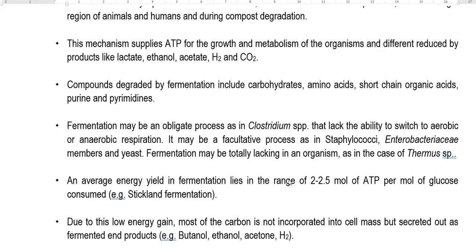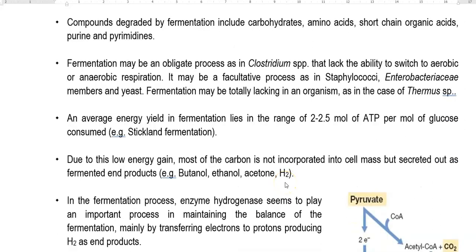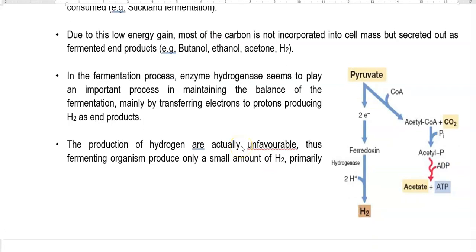On average, the energy yield during fermentation is anywhere between 2 to 2.5 mol of ATP per mol of glucose utilized. This value is obtained from the Stickland fermentation. Due to this low energy gain, most of the carbon may not get incorporated into the cell mass, but is instead secreted out as fermented end products, mainly butanol, ethanol, acetone, and hydrogen.